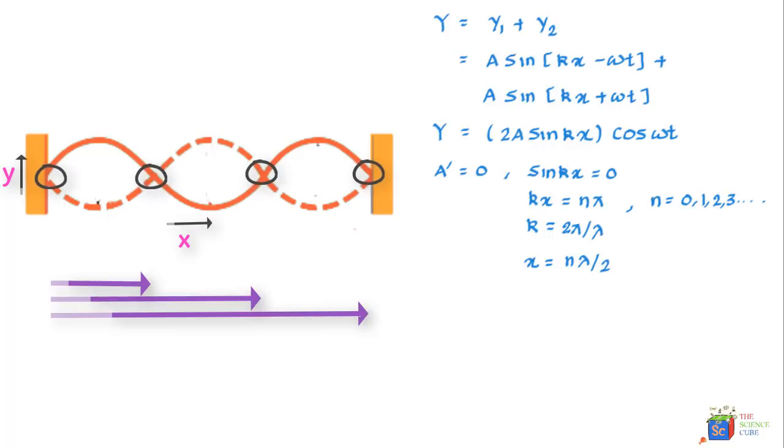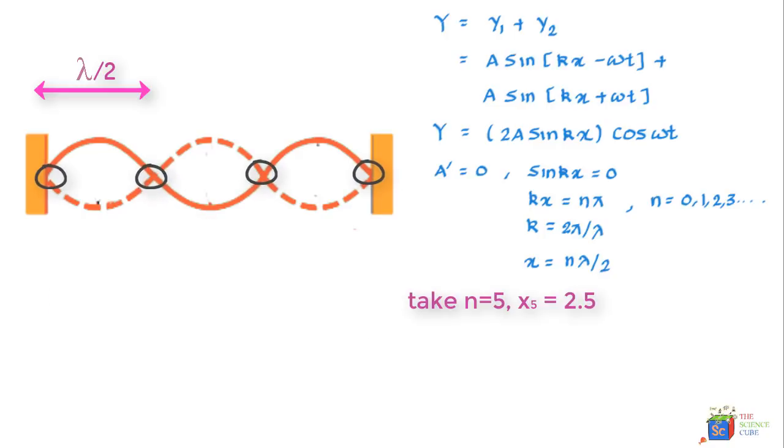So we've taken this expression k is equal to 2 pi upon lambda and substituted in this equation to get x is equal to n lambda upon 2. So you get your nodes for all such x values where the point does not move at all. You can also see that each node is separated by lambda upon 2 as in if you take a certain value of n and you take the consecutive value. Let's say you take n as 5 and then you take n as 6 and you substitute n is equal to 5 here and then n is equal to 6 and you take the difference. You'll get the difference as lambda upon 2.